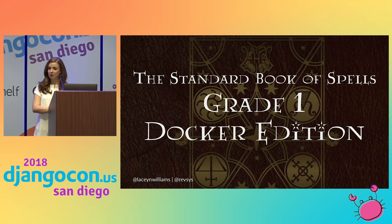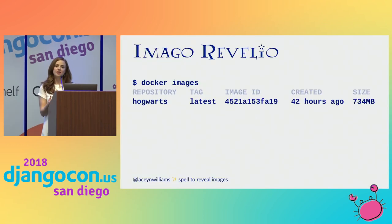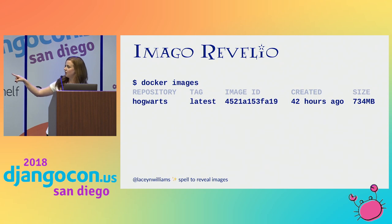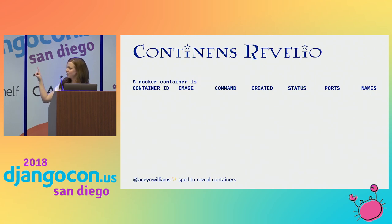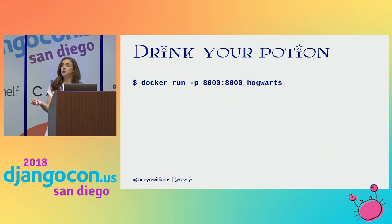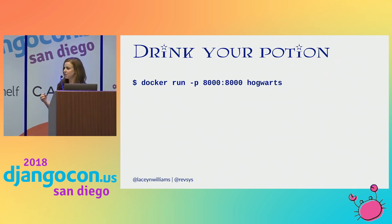Now we're finished talking about Polyjuice Potion and we're going to talk about some charms — some spells. This is all about how you interact with your containers whenever you're actually running your project in development. You run the docker images command to see the images that you have — we can see our Hogwarts image and its image ID. We can also reveal our containers by running docker container ls, which will show us any containers that we currently have running.